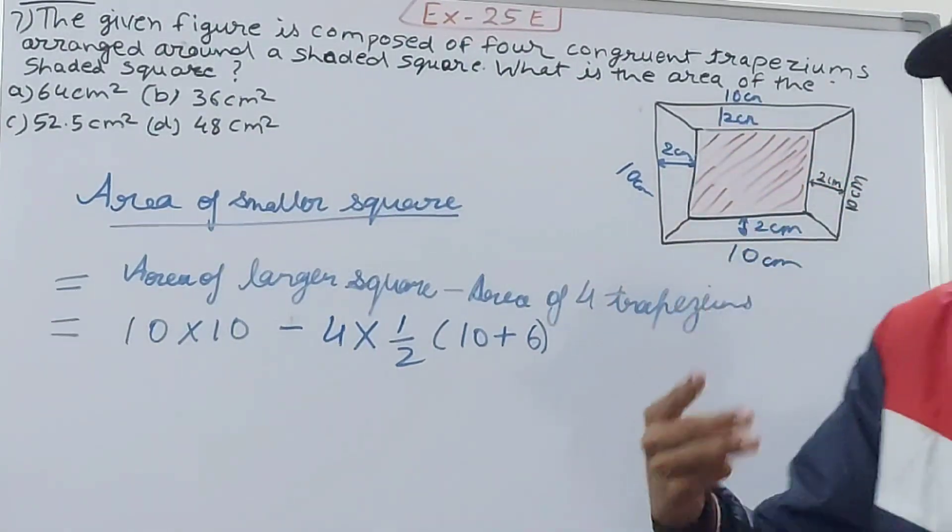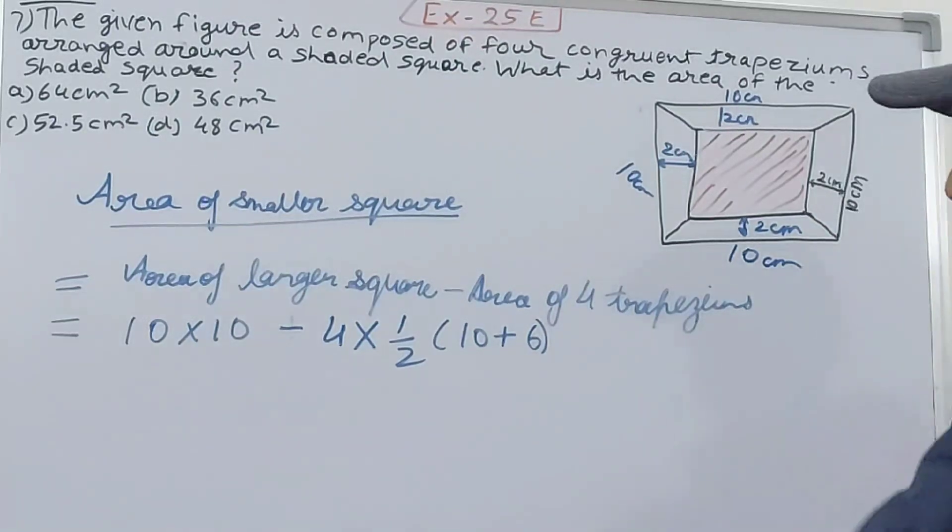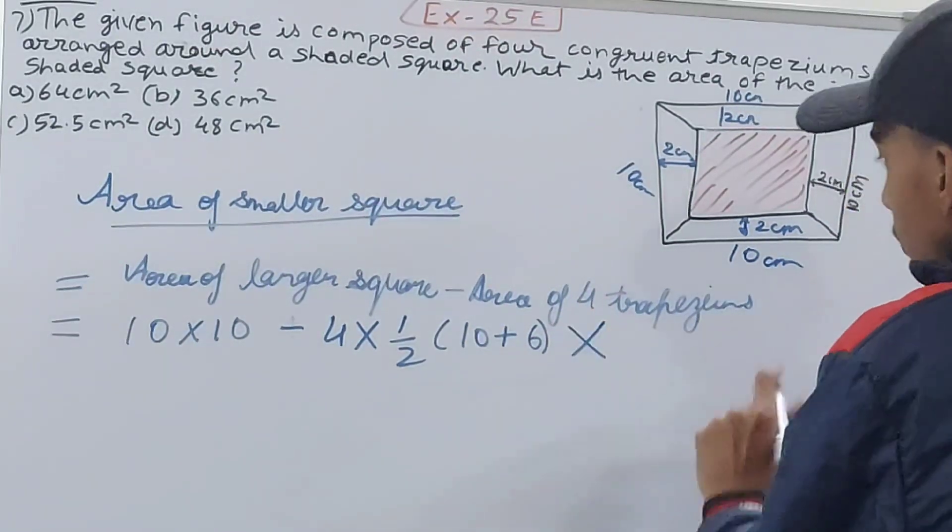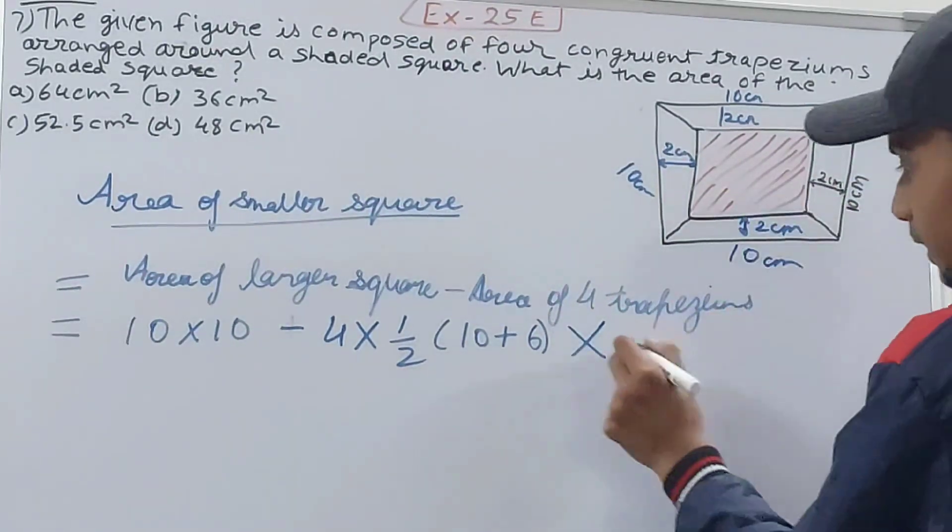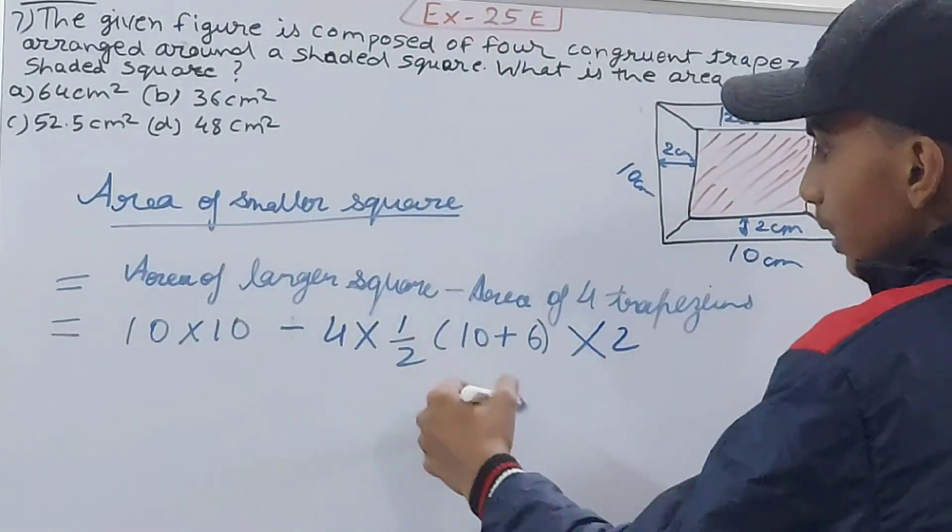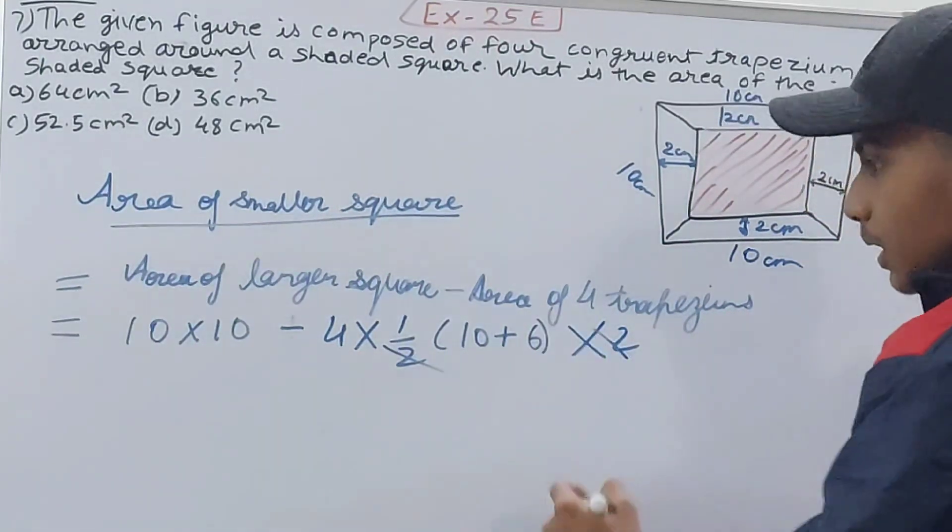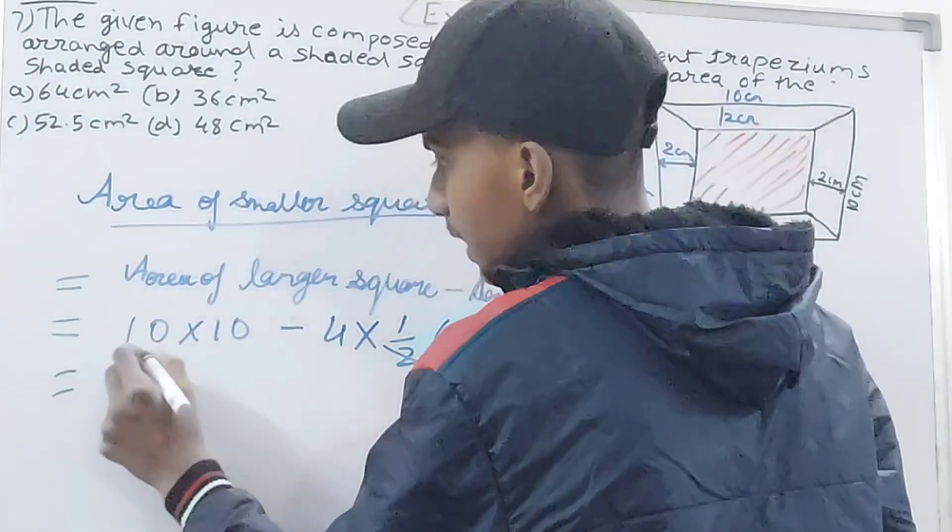If one side is 6 then all three others will also be 6 because it is a congruent trapezium. So 10 plus 6, now into height. Height I told you before is 2.